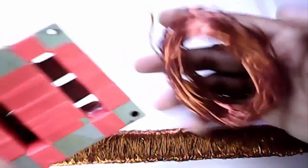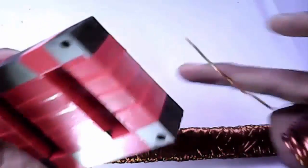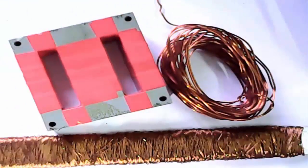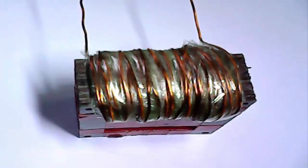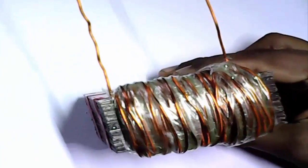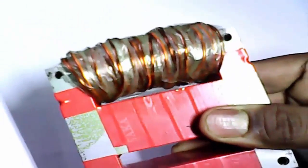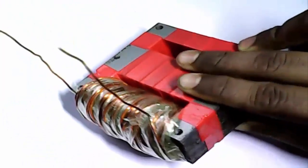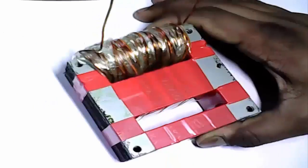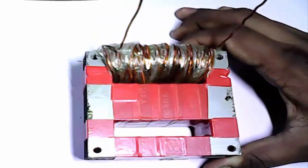Now set DC wire here. We need to wrap wire. See, we set our DC wire. Wrapping perfectly. We need one feet DC wire for 12 volt.